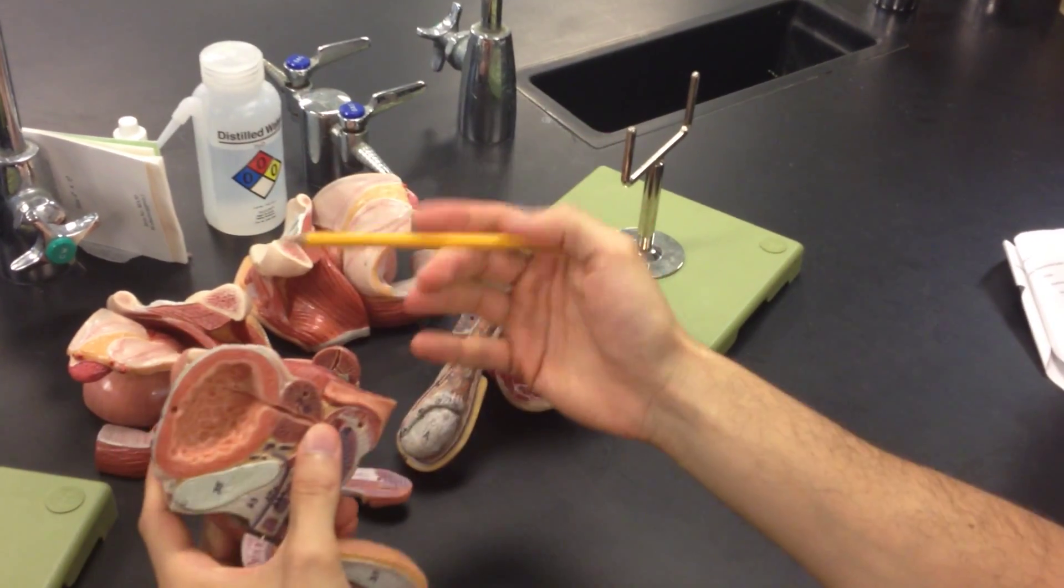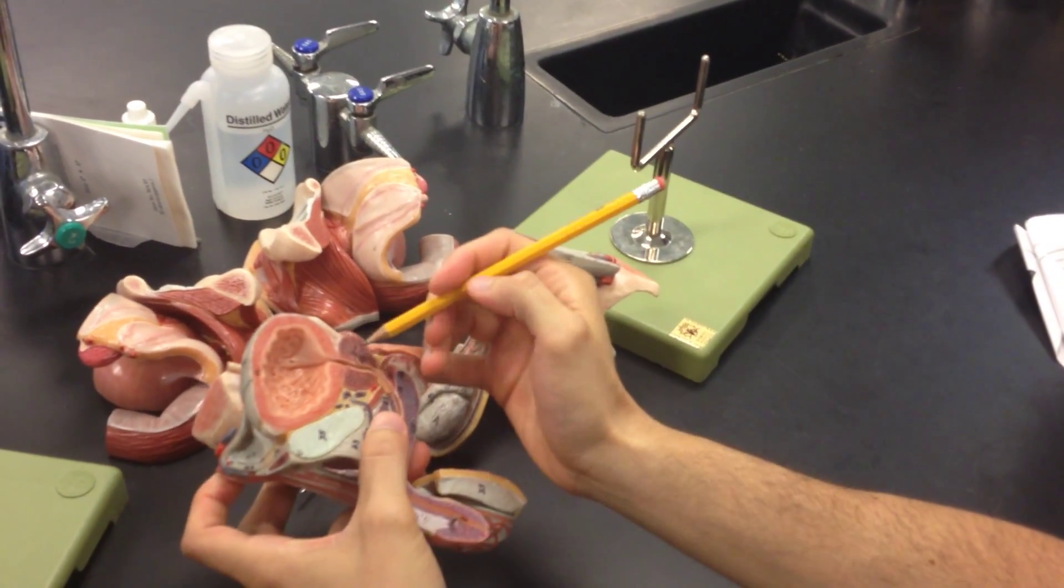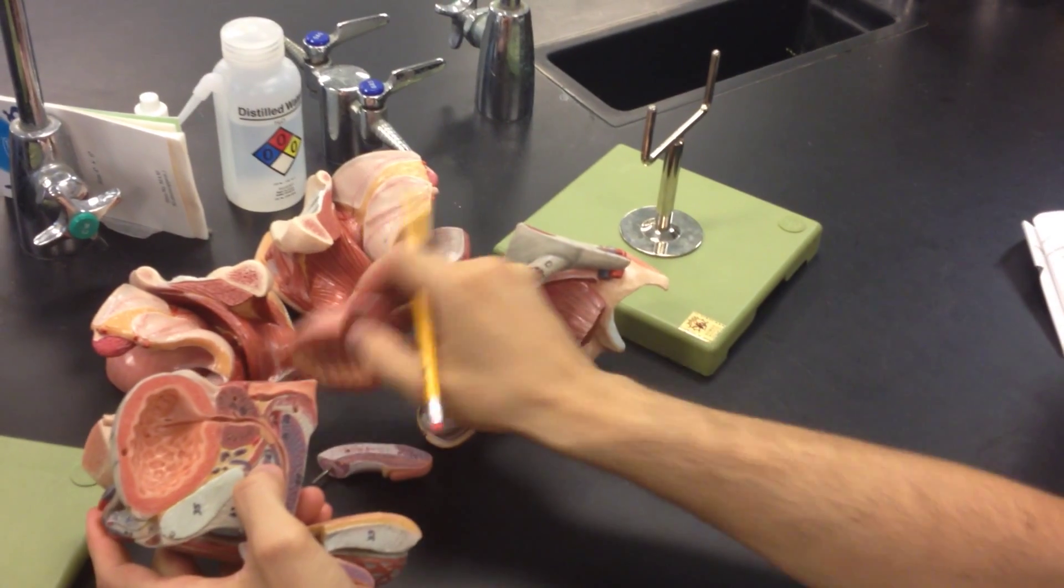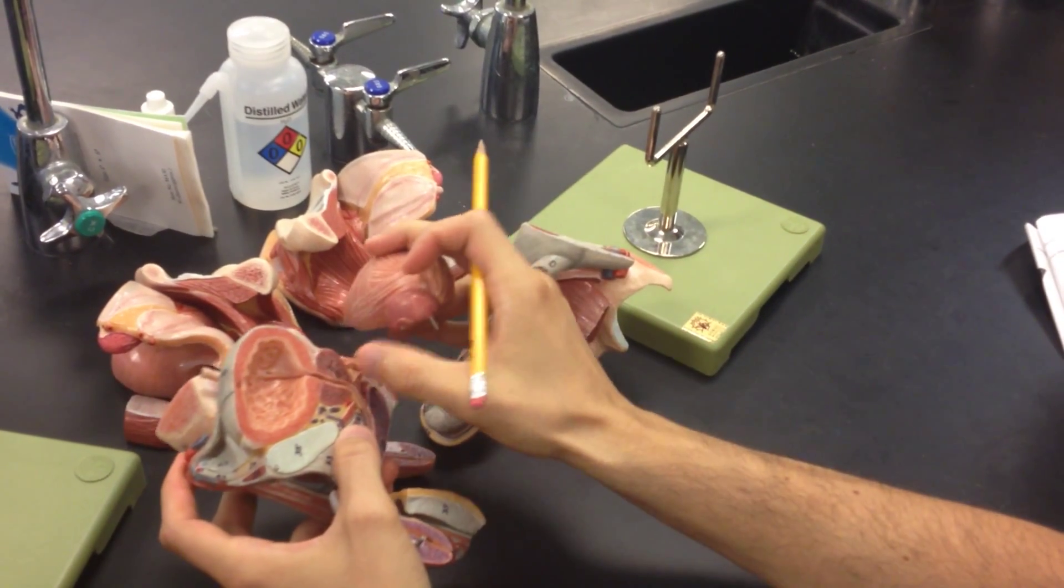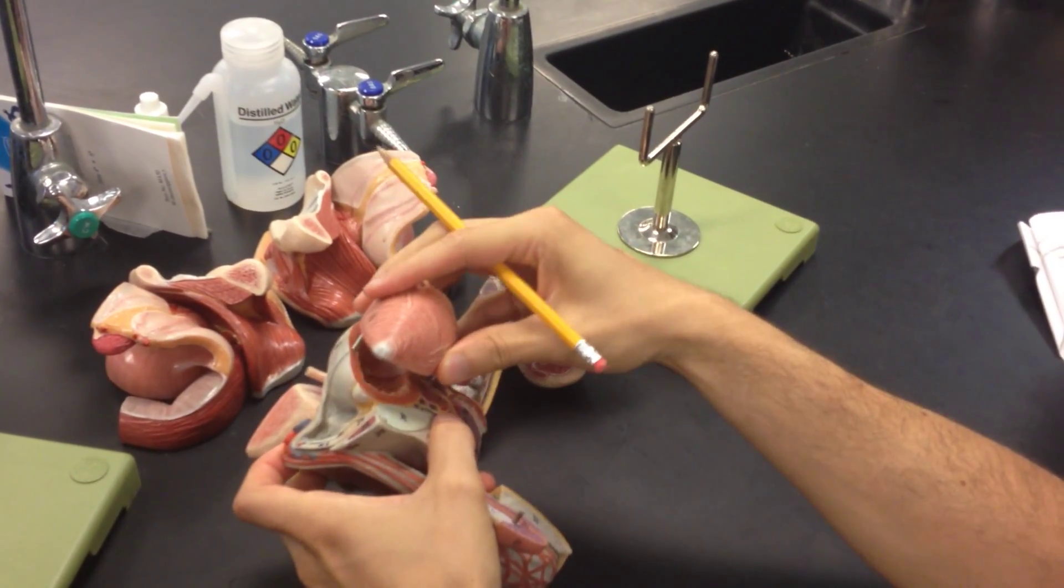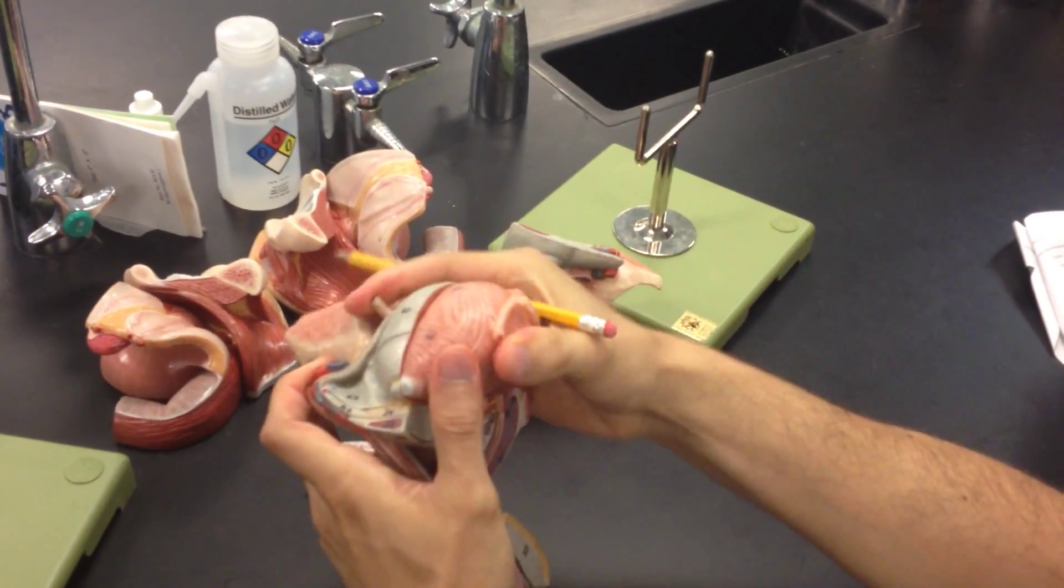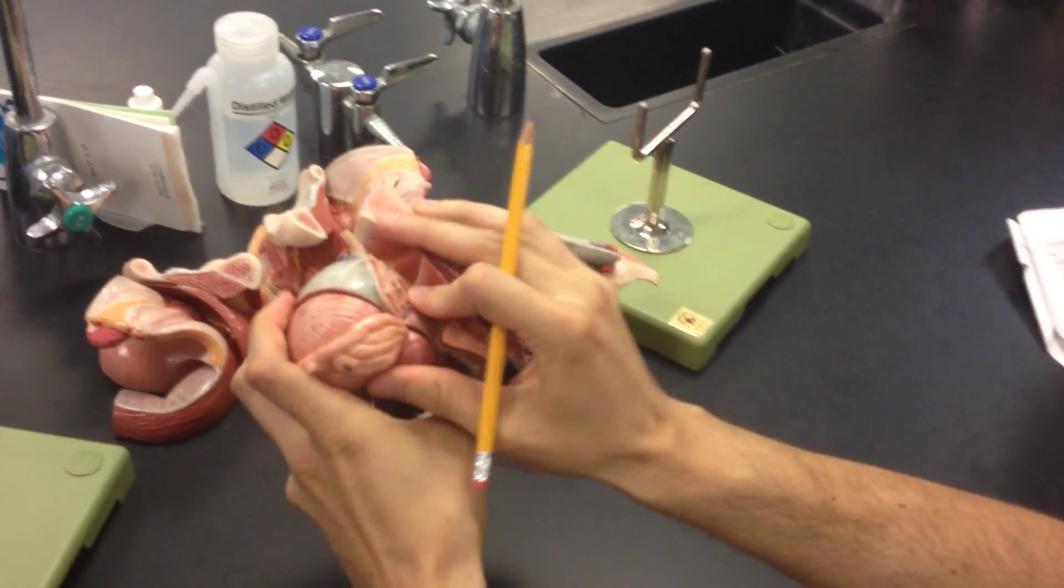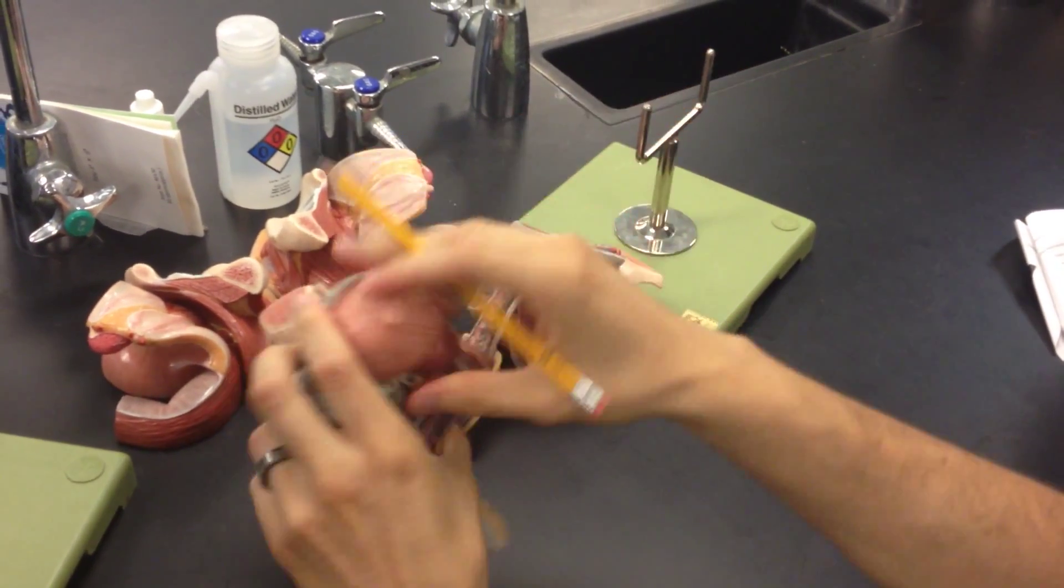As we go inside, we go past the seminal vesicles and now we enter this structure known as the prostate. So this one and this one, same thing—prostate. I'm going to actually put it together just so everybody can see what it looks like as a whole. That's the prostate gland.